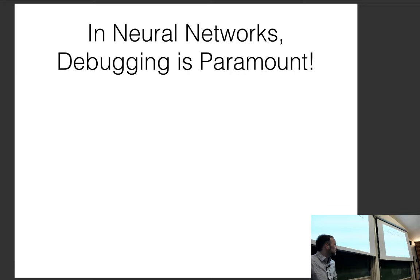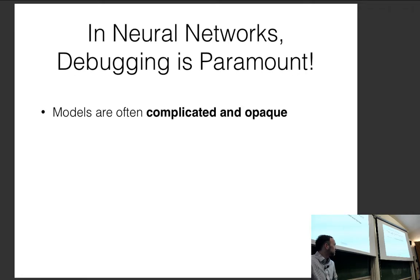The reason why debugging is paramount in neural networks is several-fold. Everybody has written and debugged lots of programs, but there are certain features of neural networks that make them difficult. Models can often be complicated and opaque — humans aren't really good at looking at large parameter matrices and understanding what's going on underneath.